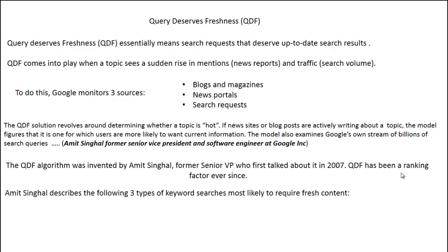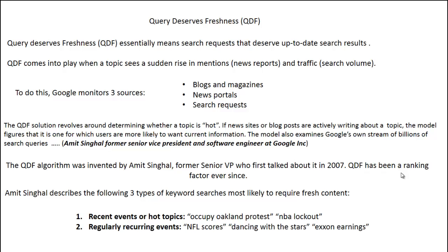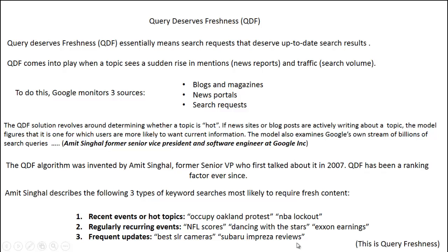Amit Singhal describes three types of keyword searches most likely to require fresh content: recent events or hot topics like the Occupy Oakland protest or NBA lockout; regularly recurring events like NFL scores or Dancing with the Stars; and queries requiring frequent updates like best SLR cameras or Subaru Impreza reviews. It makes total sense — if somebody is searching for best SLR cameras, they're unlikely to be looking for results from seven or eight years ago. They're looking for newer and fresher results, and these are the kinds of queries affected by QDF.